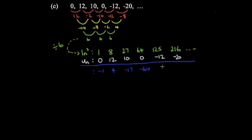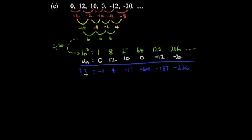To go from 125 to −12 you subtract 137, and then to go from 216 to −20 you subtract 236. We need to find out what this blue line is, because the white line equals the green line plus the blue line.